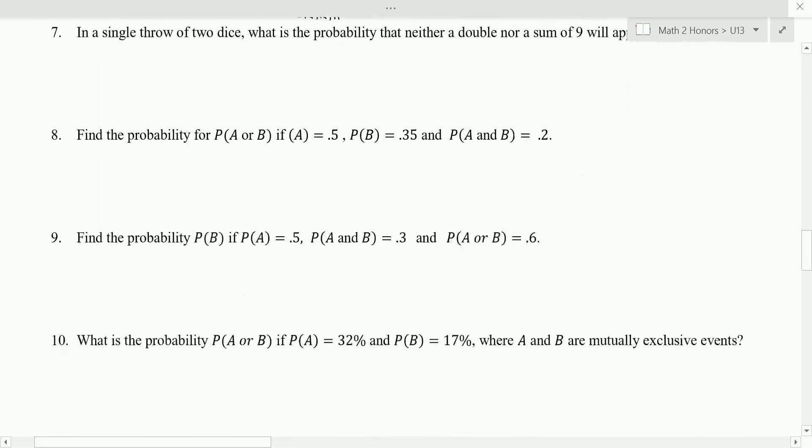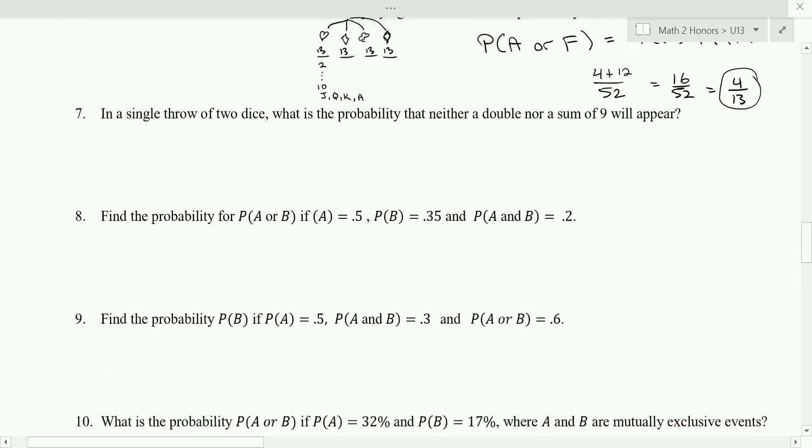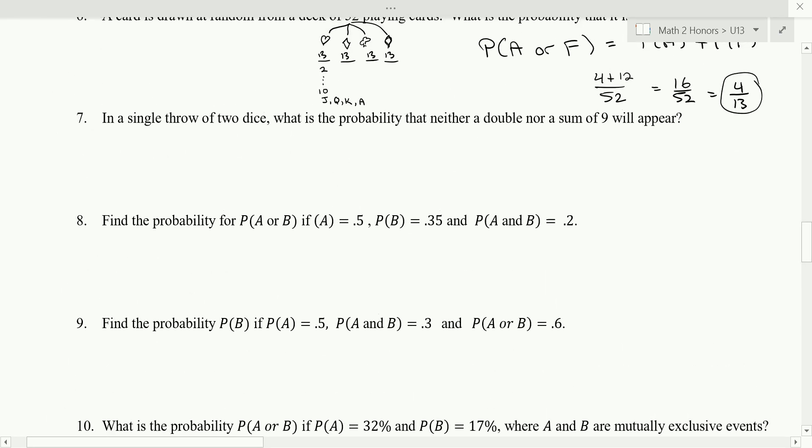Okay, let's now take a look at number eight. We want to find the probability for A or B and I apologize, another typo, it should say the probability of A, it should be P of A, not just A. Probability of A is 0.5, probability of B is 0.35, and the probability of A and B is 0.2. And usually when they're out of context like this and you don't have much information, this is when you've got to rely more heavily on the formulas. Okay?